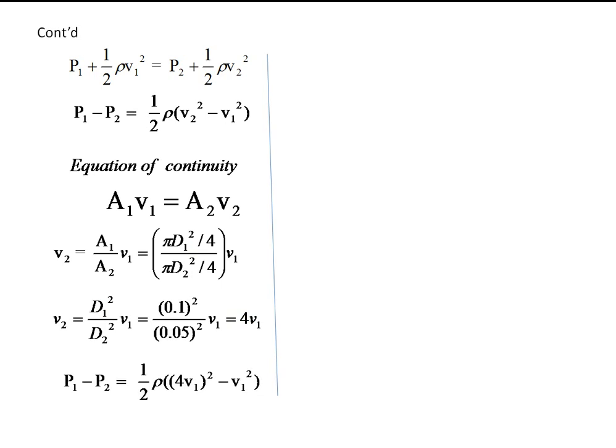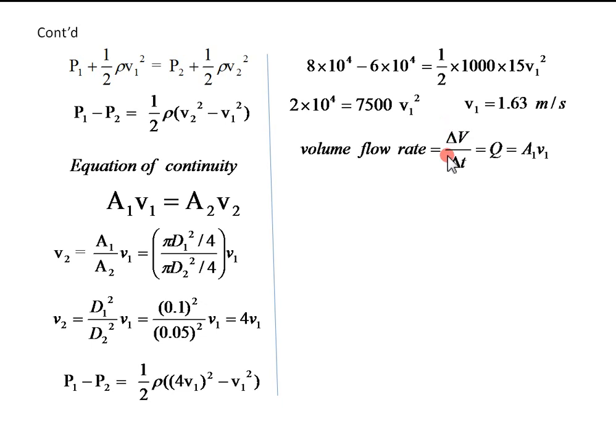Using this value in this expression, half rho, 4V1 squared minus V1 squared, 4V1 squared is 16V1 squared minus 1V1 squared is 15V1 squared. Rearranging and solving for V1, you get V1 equals 1.63 m per second. Volume flow rate is therefore delta V over delta T, which is A1 times V1, and this gives 0.013 cubic meter per second.